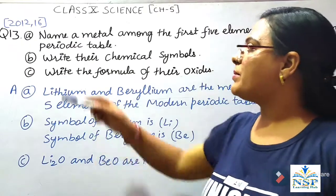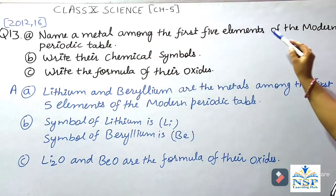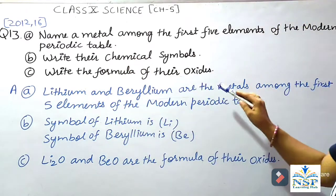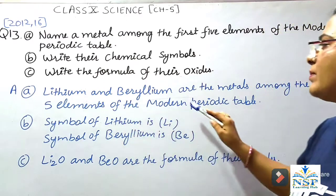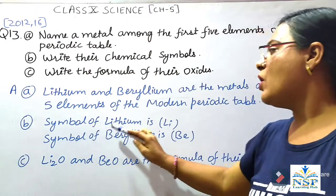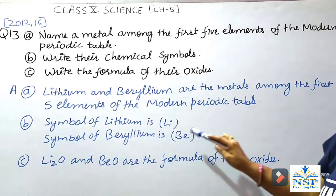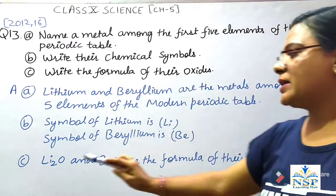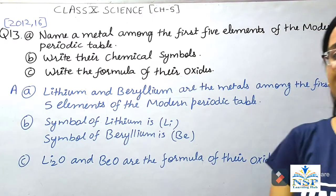Question No. 13: Name a metal among the first 5 elements of the Modern Periodic Table. Lithium and beryllium are the metals among the first 5 elements. Their chemical symbols are Li and Be. The formula of their oxides are Li₂O and BeO.